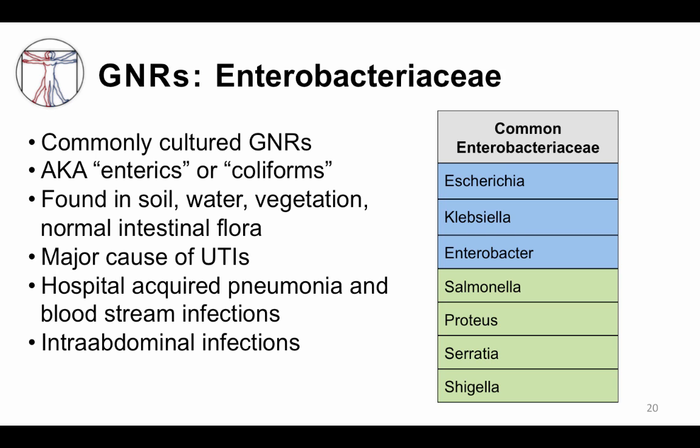Enterobacteriaceae are ubiquitous — the largest family of gram-negative rods and the most commonly cultured in the hospital. Many enterics are normal commensals and cause opportunistic disease if they migrate outside of normal tissues. Examples include E. coli, Klebsiella, and Proteus. E. coli is actually non-pathogenic in its normal environment, unless it develops certain genetic virulence factors, including diarrheal syndromes and the hemolytic uremic syndrome. Enterobacteriaceae are also major causes of UTIs, hospital-acquired pneumonia, bloodstream infections, and intraabdominal infections. Other Enterobacteriaceae, like Shigella and Salmonella typhi, are always pathogenic.